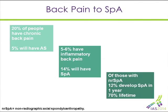This is the way I paint this picture now. There's 20% of the people out there with chronic back pain; 5% of them in that population will have SPA — that's about 1% of the overall population. About 5–6% of the overall population has inflammatory back pain, but this is enriched: 12–14% will have SPA in a year and 70% over a lifetime, of those with non-radiographic SPA. These are the people we want to find.